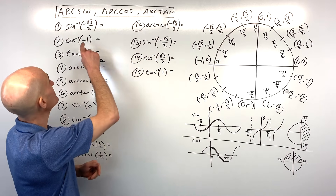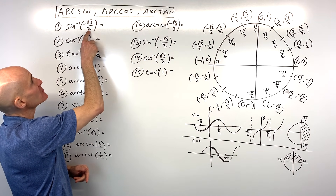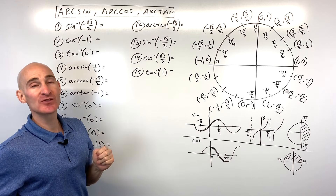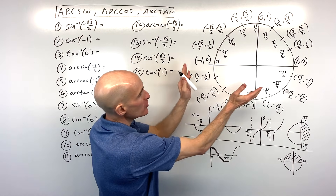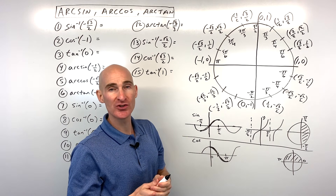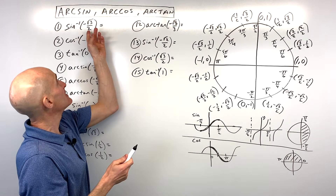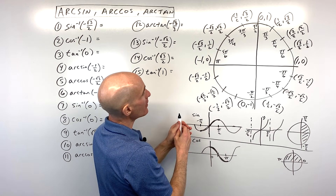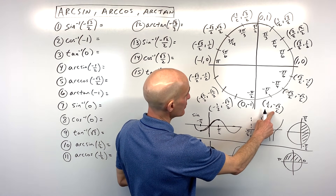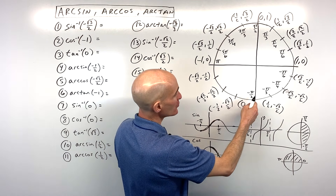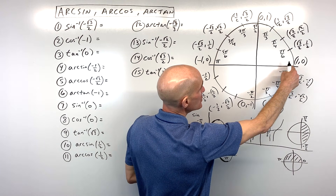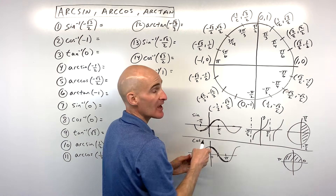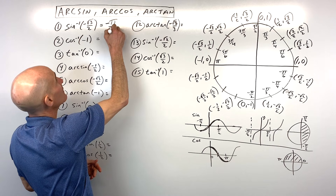If we want to find the sine inverse of negative square root three over two, that's really asking: sine of what angle equals negative square root three over two? On the unit circle, sine is the y-coordinate. The y-coordinate is negative root three over two, but remember we're restricted from negative pi over two to positive pi over two. So the answer is negative pi over three.